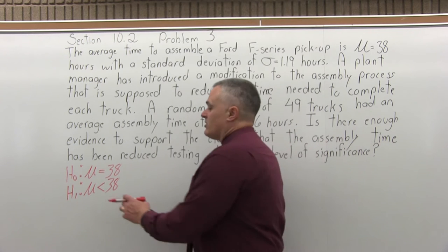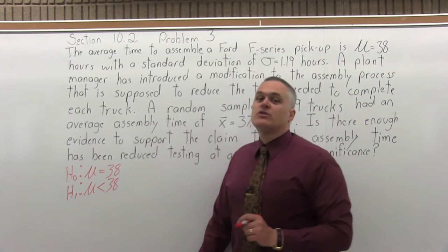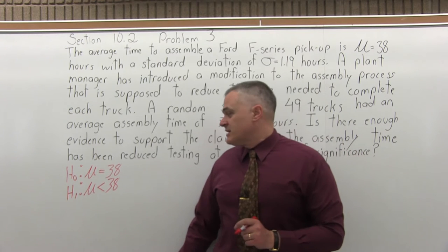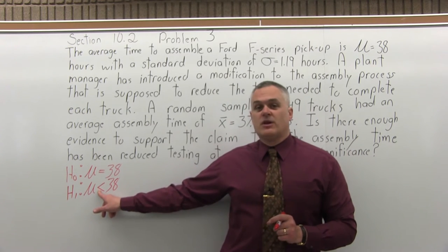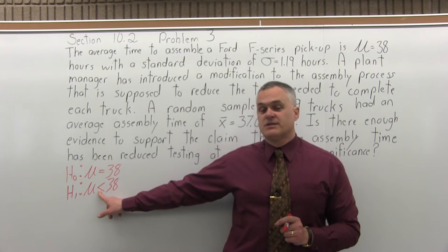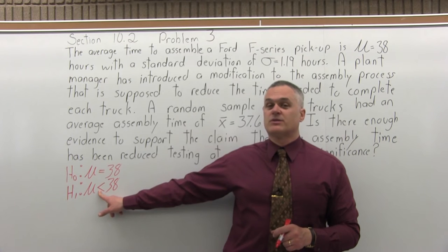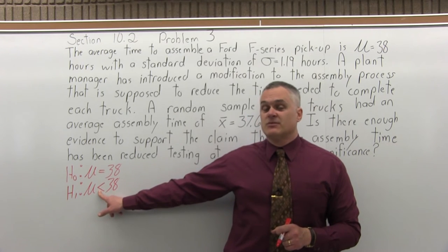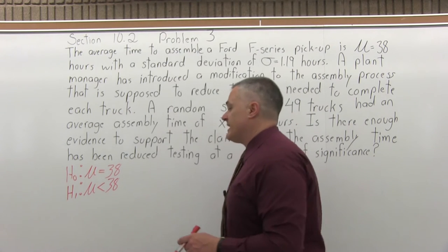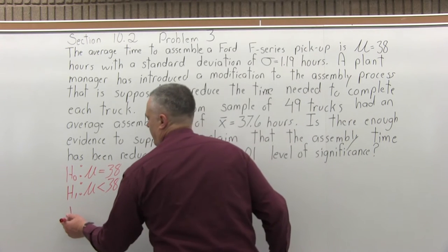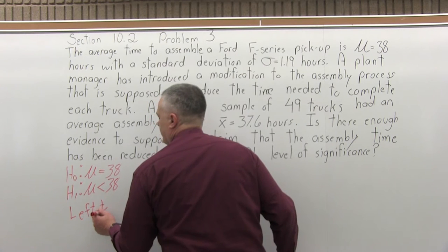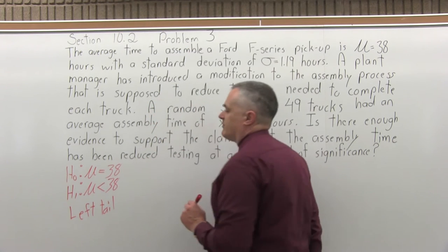Step three: determine if this is a left tail, right tail, or two tail test. To determine what type of test it is, look at the inequality symbol in the alternate hypothesis and see what direction it points. My alternate hypothesis has a less than symbol which points to the left, so this would be a left tail test.